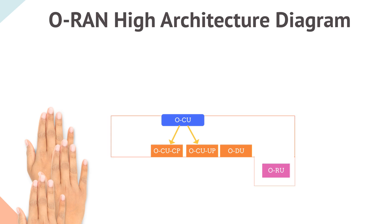This logical split allows different functionalities to be deployed at different locations of the network as well as on different hardware platforms. CU and DU components are called O-Cloud network functions since these can be deployed on the cloud layer called O-Cloud.